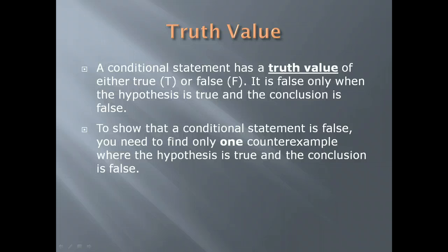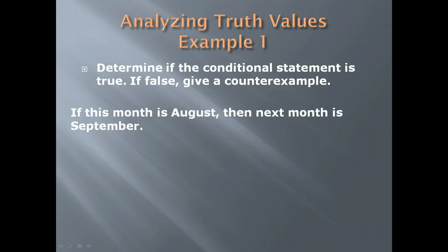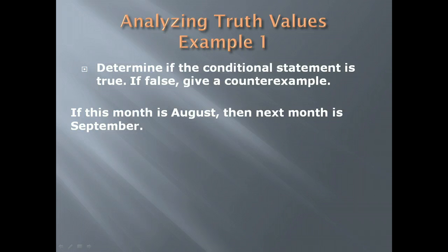A conditional statement has a truth value of either true or false — it can't be partly true or maybe true. It is false only when the hypothesis is true and the conclusion is false. To show that a conditional statement is false, you need to find only one counterexample where the hypothesis is true and the conclusion is false.